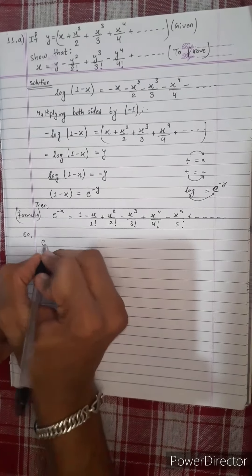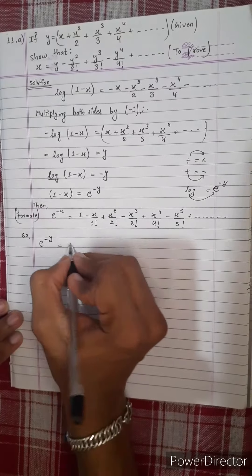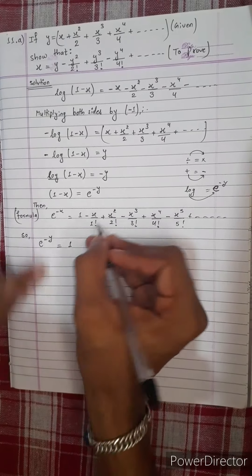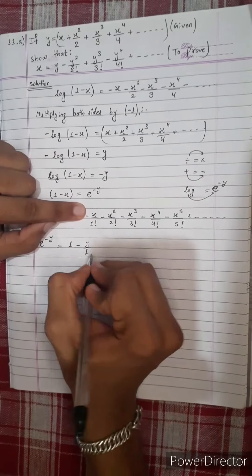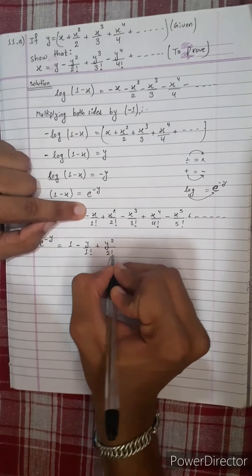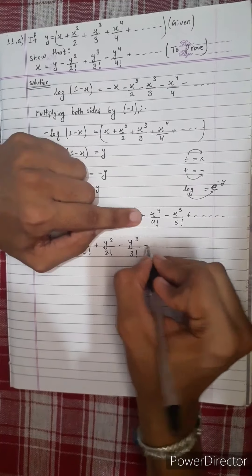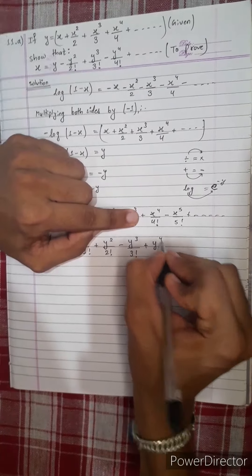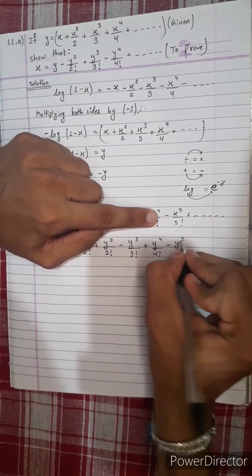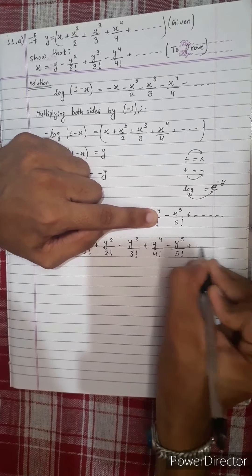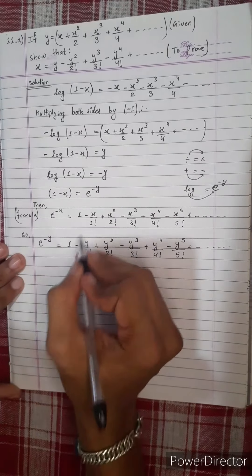We also have the formula for e to the power minus y: 1 minus y by 1 factorial plus y squared by 2 factorial minus y cubed by 3 factorial plus y to the power 4 by 4 factorial minus y to the power 5 by 5 factorial plus dot dot dot.